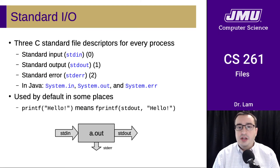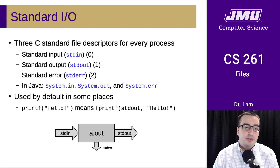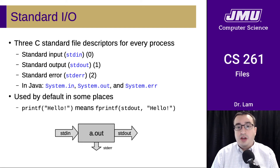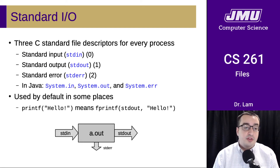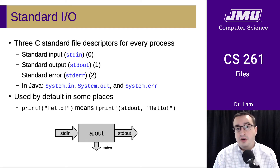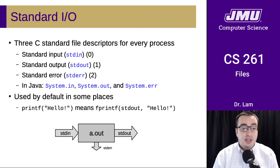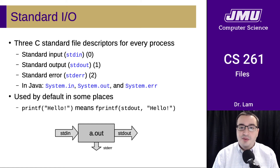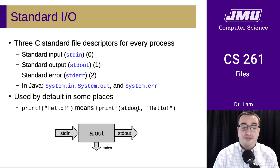Every process has three standard file descriptors that are opened when the process is started: standard input, standard output, and standard error. These are analogous to System.in, System.out, and System.err in Java. These are used by default in some places — for instance, whenever you call printf, it actually means fprintf to standard out, so it's kind of an abbreviation for that.